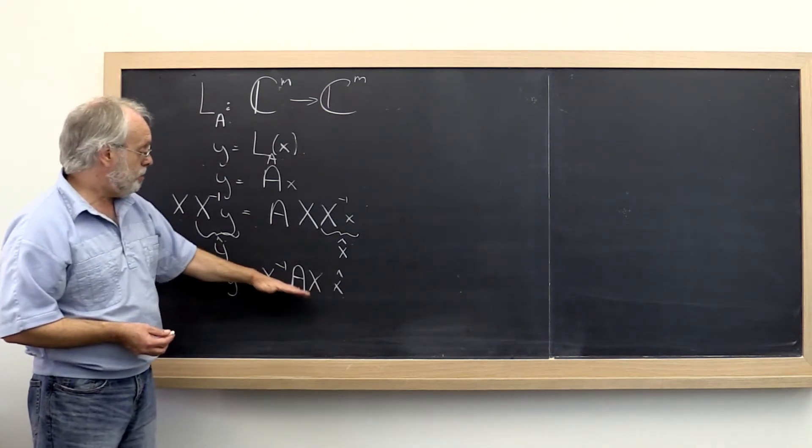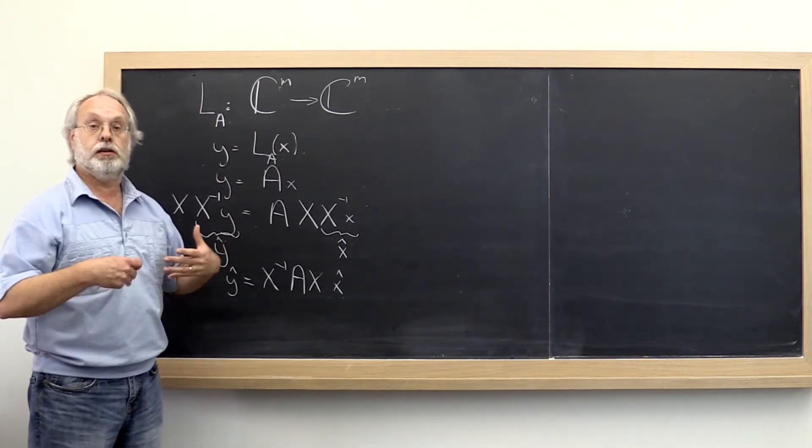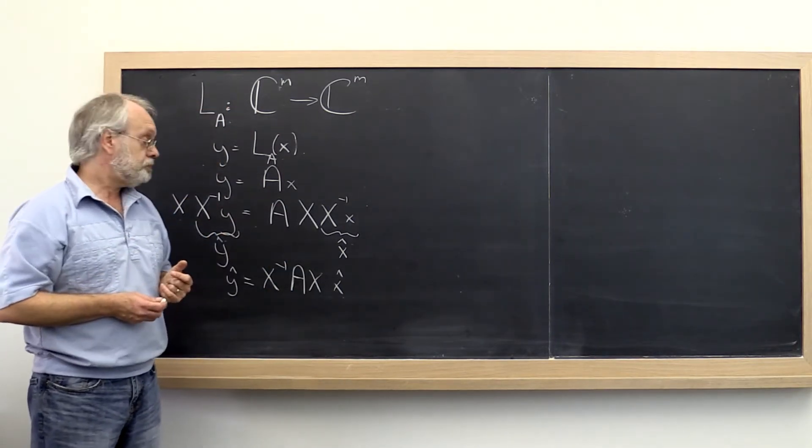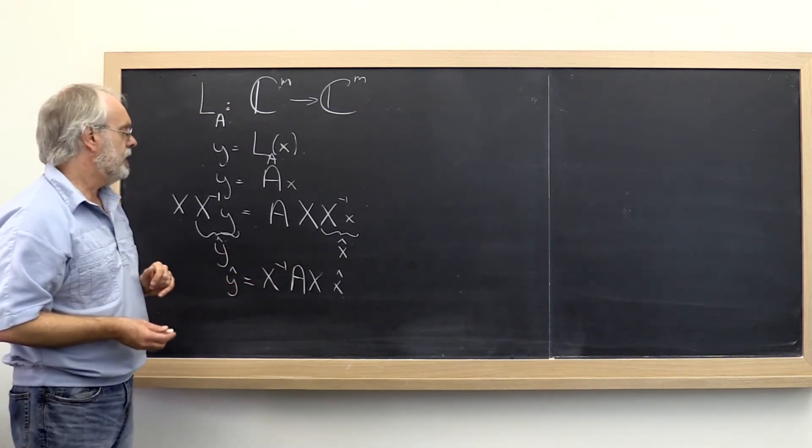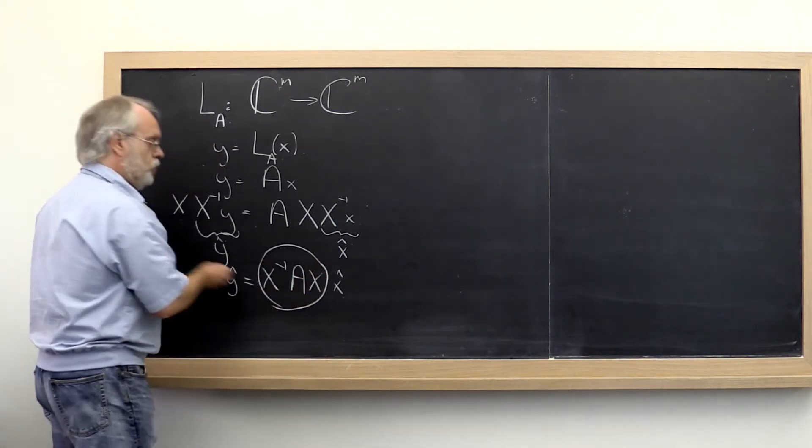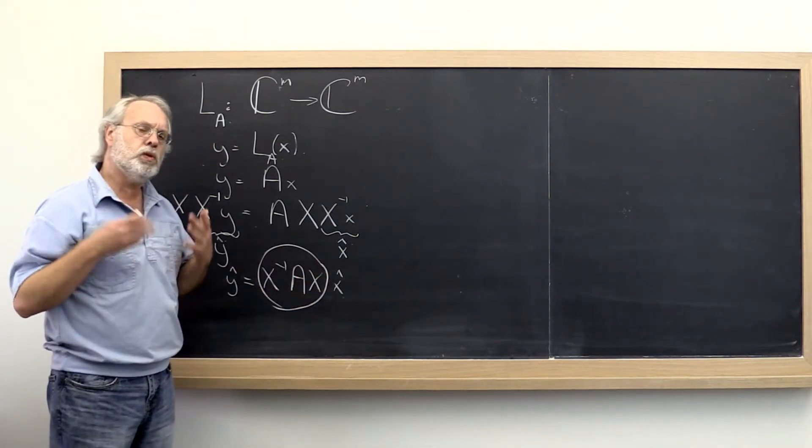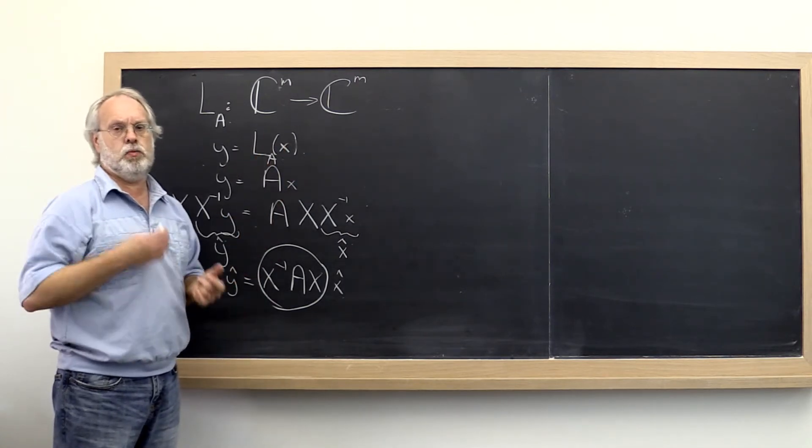So this now really is the matrix that represents the transformed linear transformation viewed in a new basis. Now let's play with this a little bit. And let's just look at this new matrix right here. What we said was, gee, wouldn't it be nice if this were diagonal?